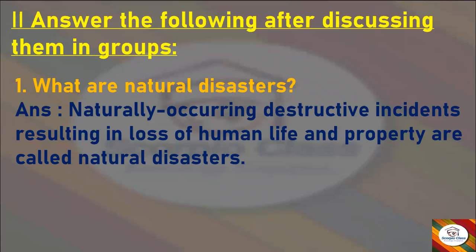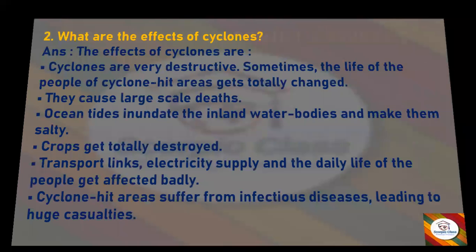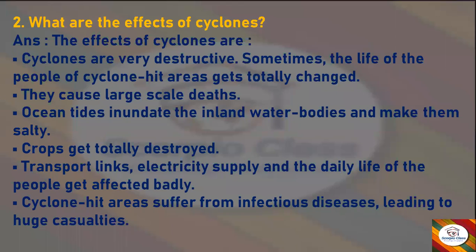Now let's get started with the first question. What are natural disasters? Answer: Naturally occurring destructive incidents resulting in loss of human life and property are called natural disasters. Second question: What are the effects of cyclones?